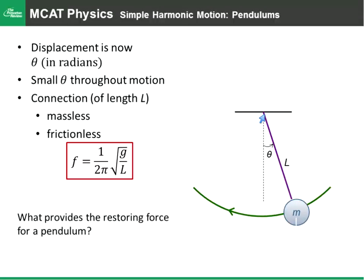The frequency of a simple pendulum is given by this formula here, one over 2π root g over L. So note that it depends on the acceleration of gravity and also on the length of this arm, this connector.